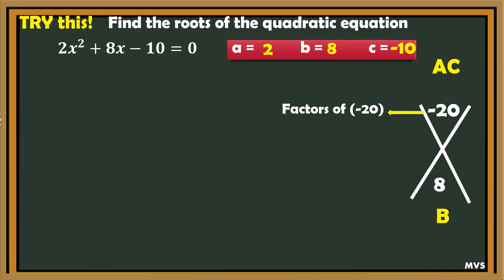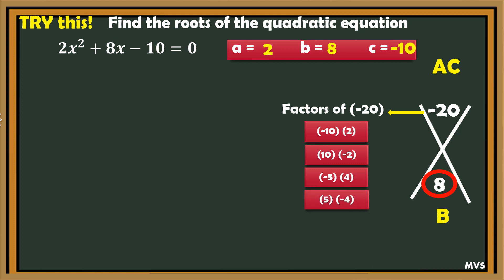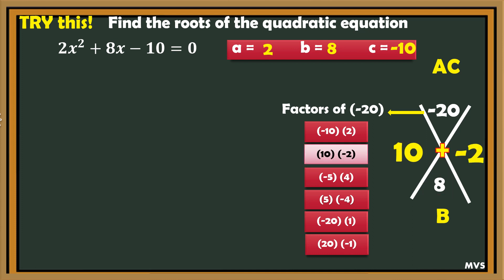Then multiply a and c: the product is negative 20. Let us determine the factors of negative 20. Since 20 is negative, we use one negative and one positive factor, wherein the sum is positive 8. The factor pairs are: negative 10×2, 10×negative 2, negative 5×4, 5×negative 4, negative 20×1, 20×negative 1. Which gives the sum of positive 8? 10 times negative 2.